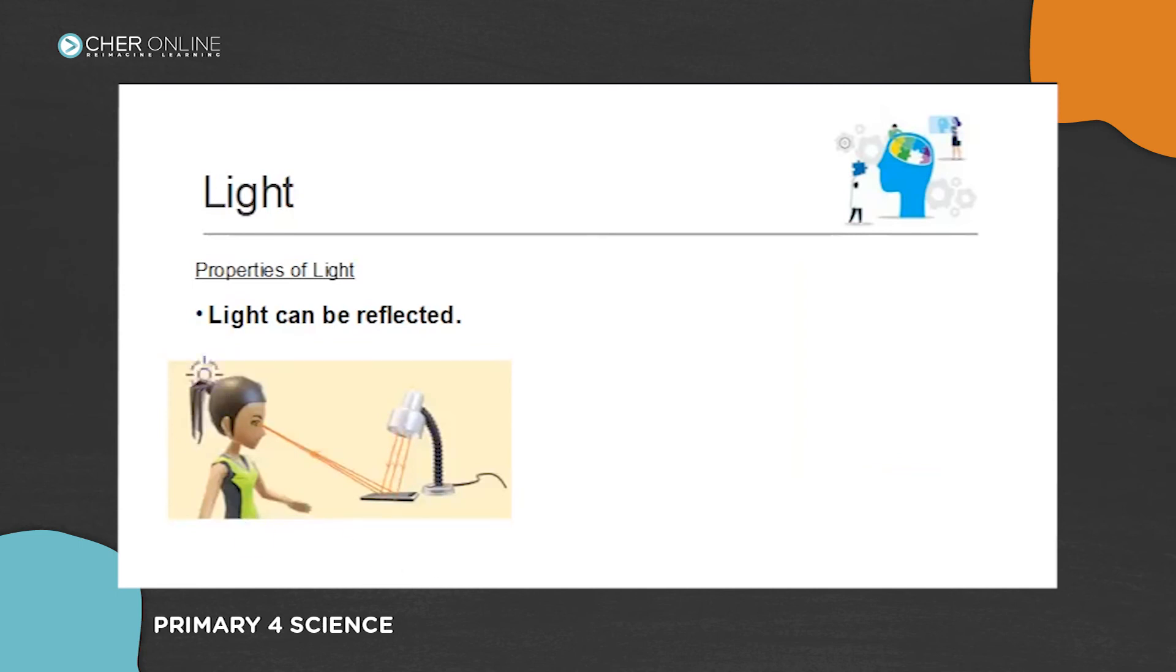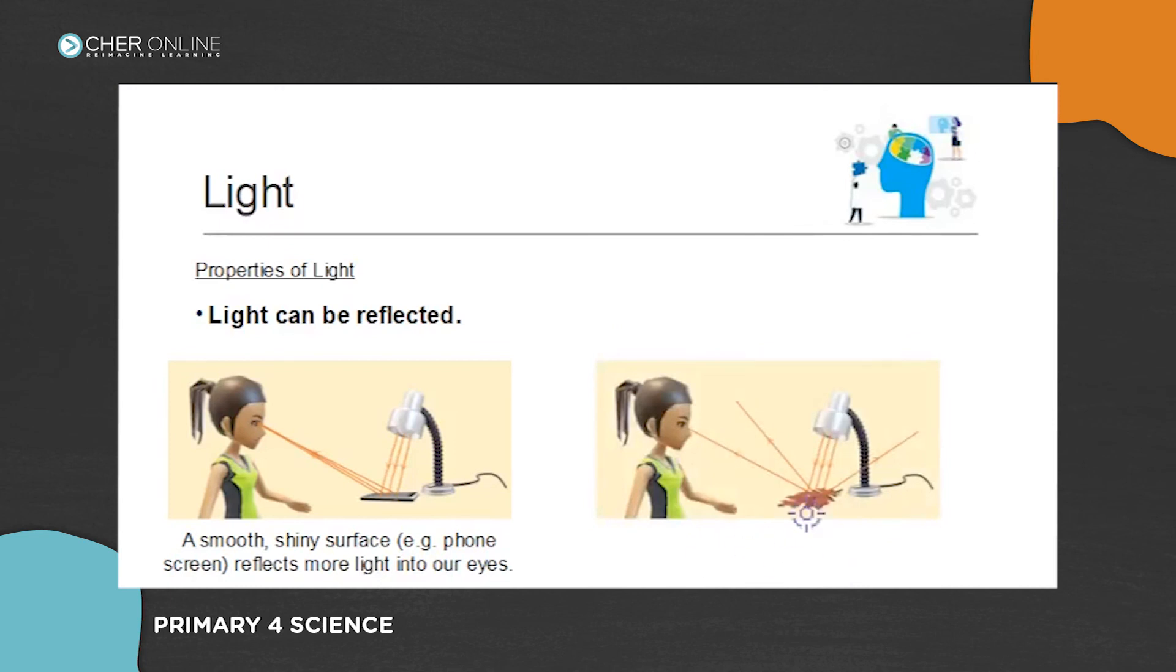Look at this: light can be reflected. So light falls from the lamp, falls on this calculator, and this calculator reflects the light into the girl's eyes. So smooth and shiny objects like this phone screen or a calculator screen reflect more light into our eyes. But if there's another piece of rough material, light will still fall on the object, and the object will still reflect light into the girl's eyes. So the girl can still see the object. But because it's not smooth, you can see that the directions of the reflected light is in all directions, so you cannot actually see your own reflection inside. So a dull and rough surface reflects less light into our eyes.